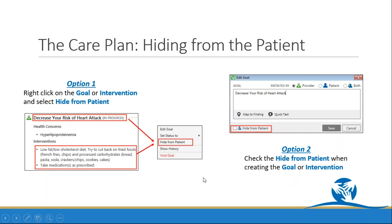You're also able to hide items from the patient at the goal or intervention levels. There are two ways to do this: from the main care plan page by right clicking on the goal or intervention and selecting hide from patient, or when you're creating, modifying, or editing the goal or intervention itself, you'll see the hide from patient button there as well.